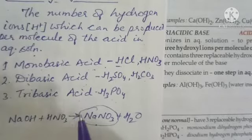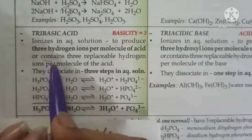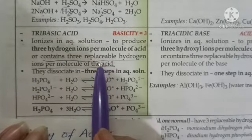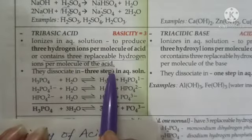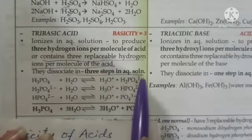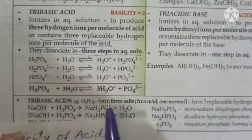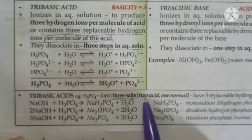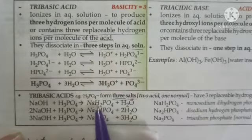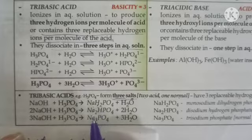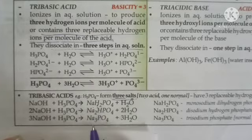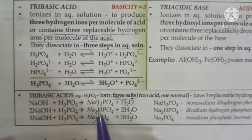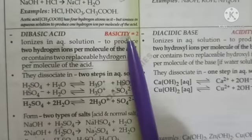Tribasic acids are acids which contain three replaceable hydrogen ions per molecule. They dissociate in three steps in aqueous solution and always form three types of salts — two acid salts and one normal salt. For phosphoric acid: first it gives monosodium dihydrogen phosphate, then disodium hydrogen phosphate, then trisodium phosphate. The basicity of phosphoric acid is three, sulfuric acid is two, and hydrochloric acid is one.